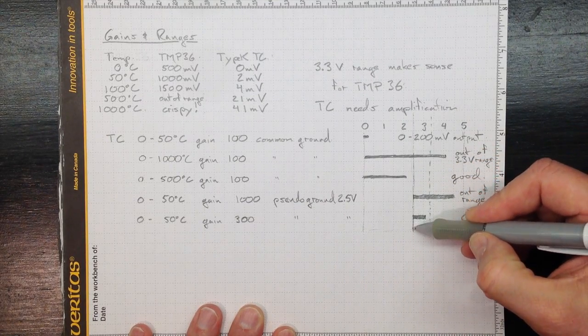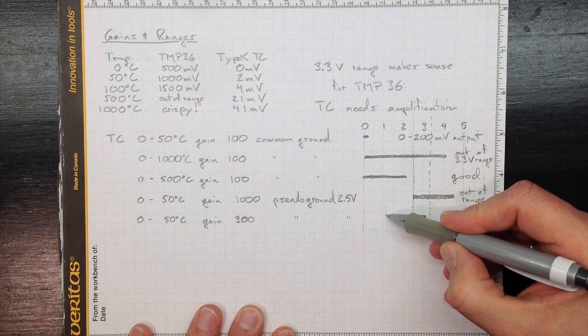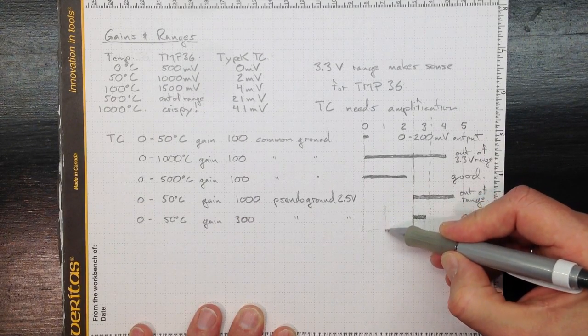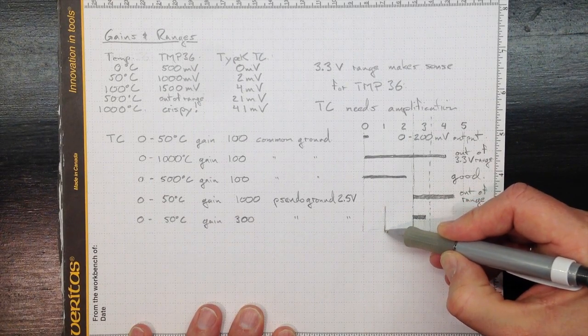This 2.5 volts for the pseudo ground might not be a really good choice. I might want to have a pseudo ground down here somewhere if I can source a good precise voltage that I can use for that reference.